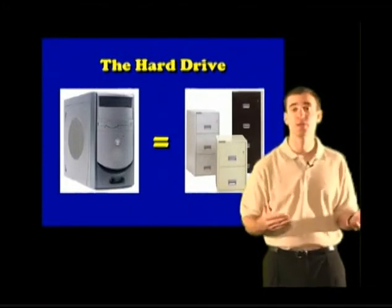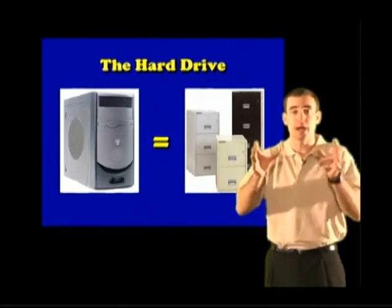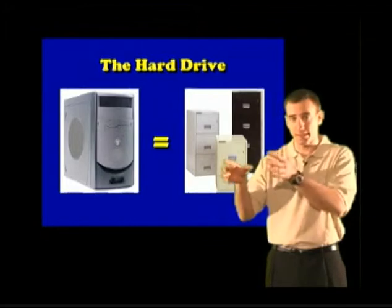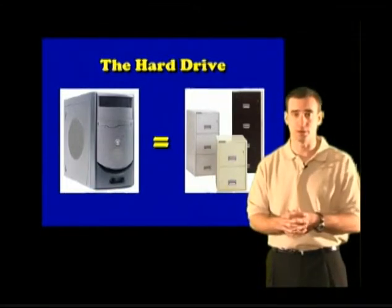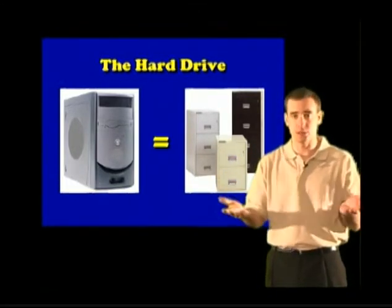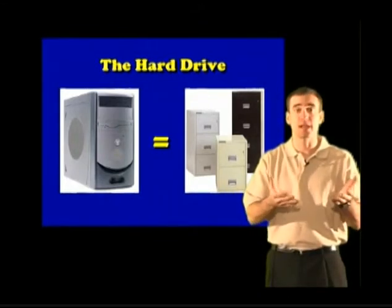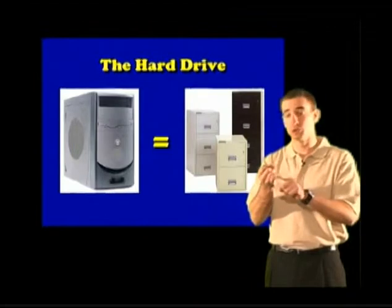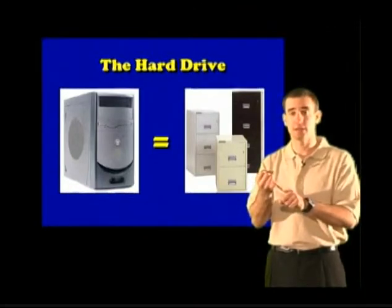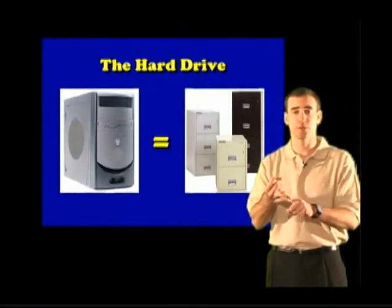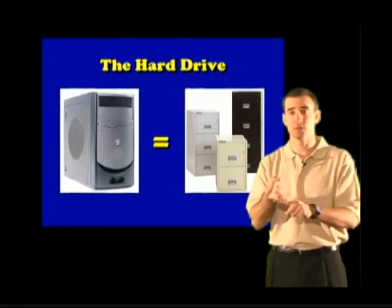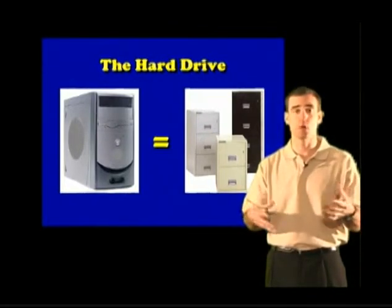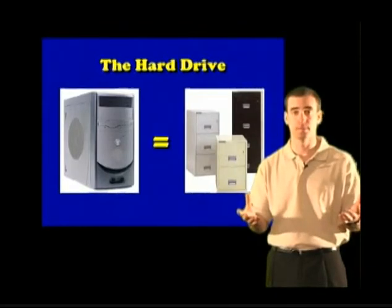You can do the same thing with your computer. You can add folders to each of the drawers or locations where you store information on your computer, and you can add subcategories just like we did with the tax example. So we know we have drawers in a filing cabinet, inside those drawers are folders, and inside those folders can be more folders or just the documents and files that we're looking for.